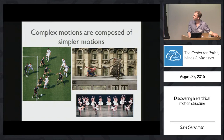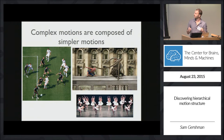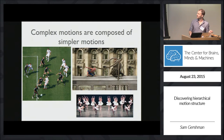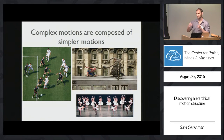Take, for example, this scene of Spider-Man fighting Dr. Octopus. We can perceive the relative motions of Spider-Man and Dr. Octopus on the train relative to the background. We can also perceive the relative motion of Spider-Man relative to Dr. Octopus. And then if we zoom in on Spider-Man, we can even see the motion of his different body parts relative to his body, and so on.